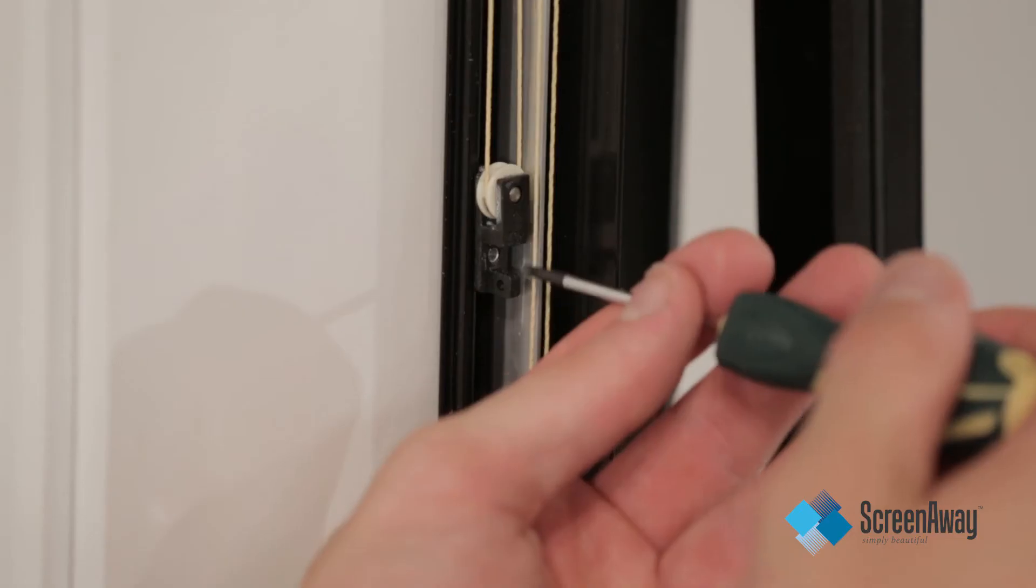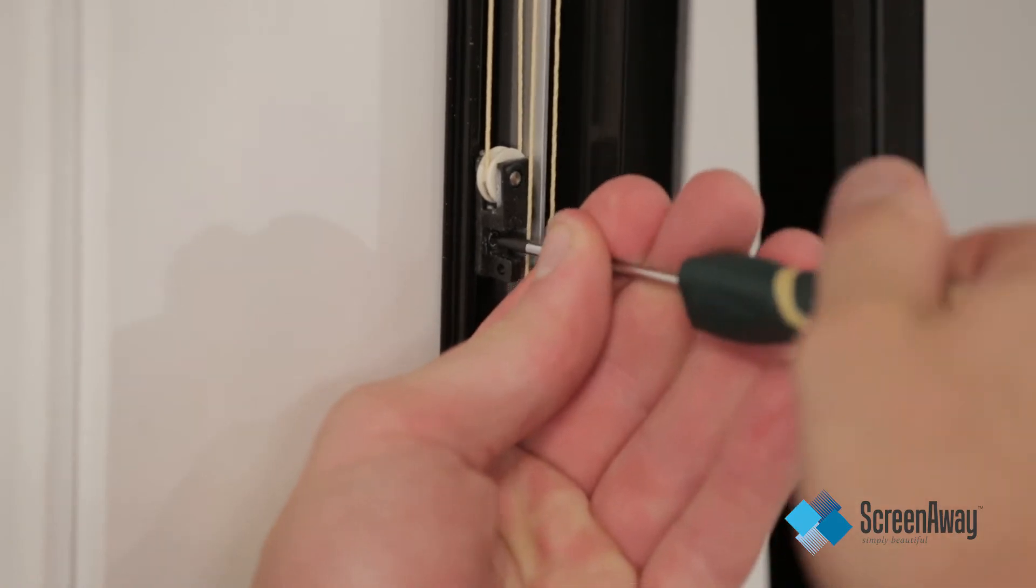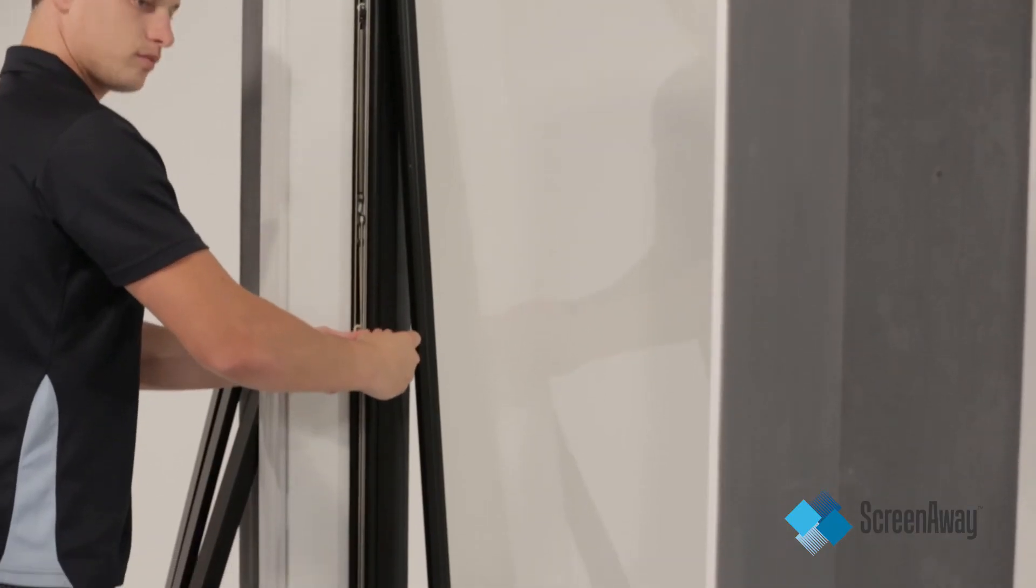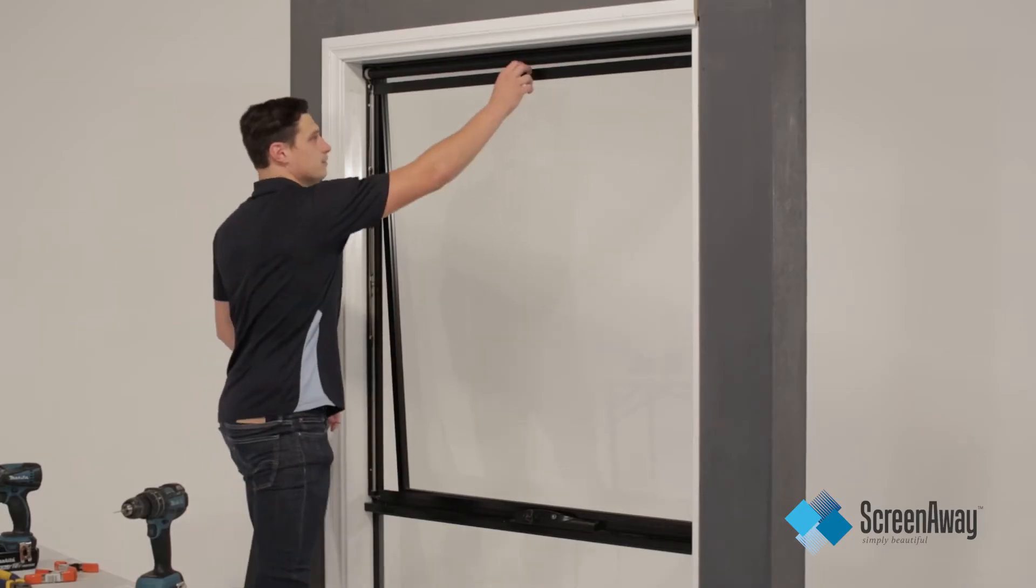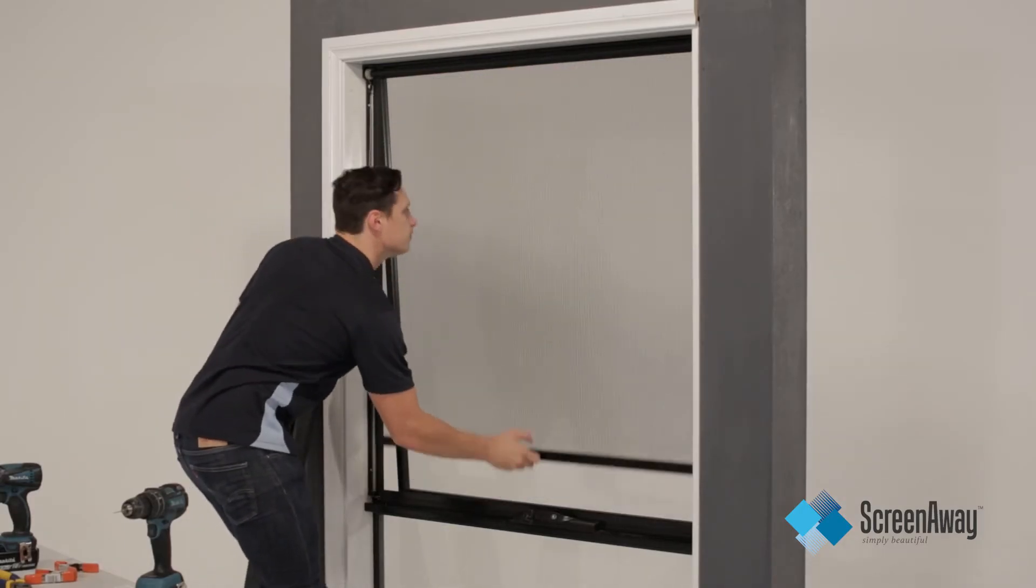If more tension is required, loosen the grub screw of the bottom pulley wheel and slide in a downward direction. Do not release the tool from the grub screw whilst tensioning. Carry out the process on both the right and left hand sides.